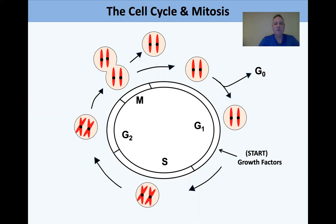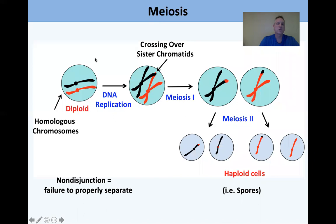After that, you have two daughter chromosomes and are born in the G0 phase.